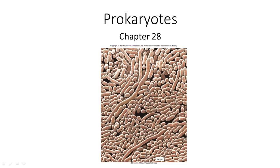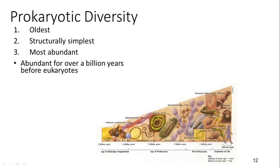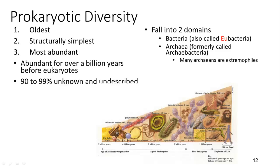Now we're going to talk about bacteria, which comprise our prokaryotic organisms. Prokaryotes are the oldest, structurally simplest, and most abundant types of life on Earth, and they were abundant for over a billion years before eukaryotes appeared. 90 to 99% are unknown or undescribed. They fall into two domains: bacteria, also called eubacteria, and archaea, also called archaeabacteria.